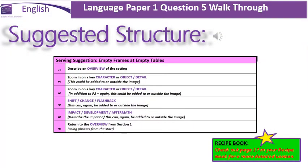This is our famous 6-part structure. Please check out page 17 in your recipe book for a more detailed version. We recommend that the first part of your writing describes an overview of the setting, the weather and the sky. Your second paragraph zooms in on a key character, object, or detail. So for example, in this image I would zoom in on the dilapidated house.